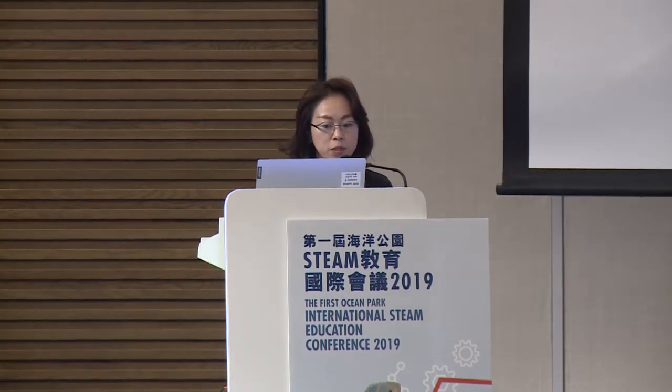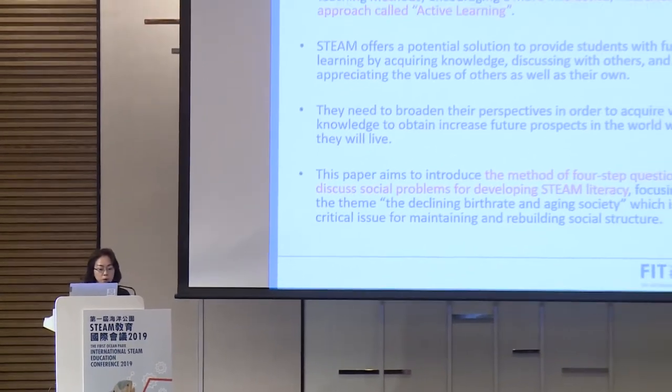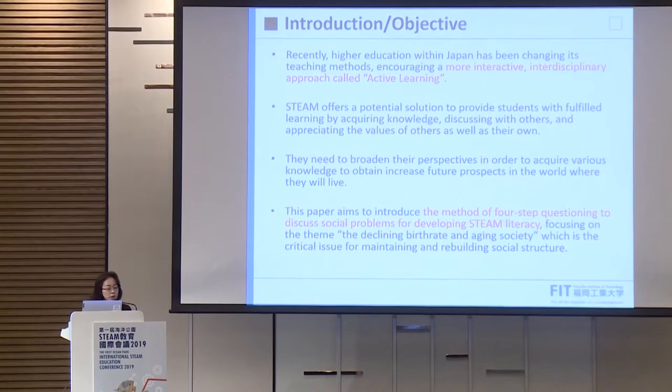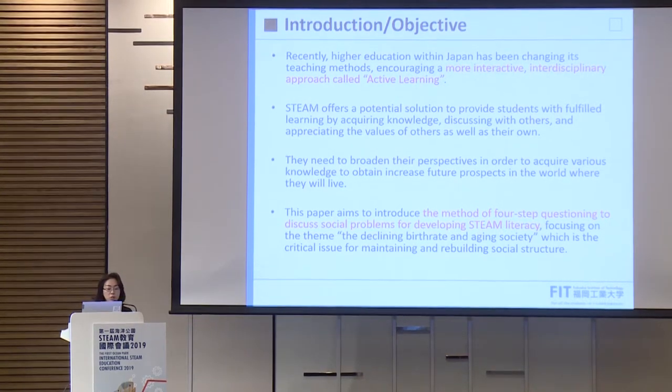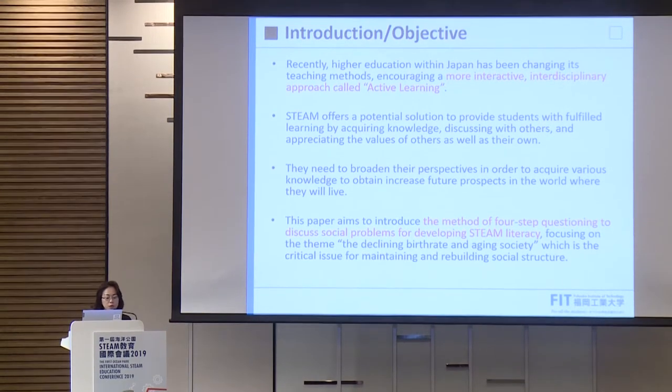The agenda is: introduction, what's the four-layered question, method, result, discussion, and conclusion. Recently, higher education within Japan has been changing its teaching methods, encouraging a more interactive interdisciplinary approach called active learning. STEAM offers a potential solution to provide students with fulfilled learning by acquiring knowledge, discussing with others, and appreciating the values of others as well as their own. They need to broaden their perspectives to acquire various knowledge and obtain increased future prospects. This paper aims to introduce the method of four-step questioning to discuss social problems for developing STEAM literacy, focusing on the declining birth rate and aging society, which is a critical issue for maintaining and rebuilding the social structure.